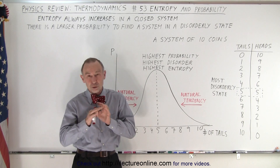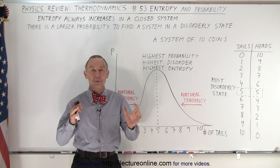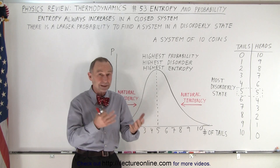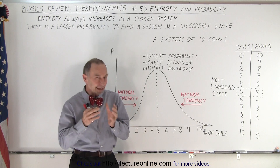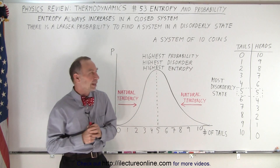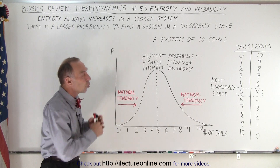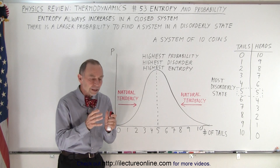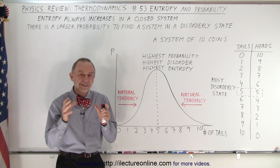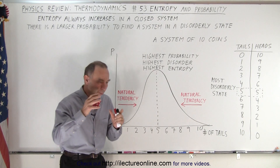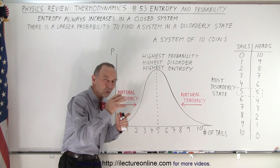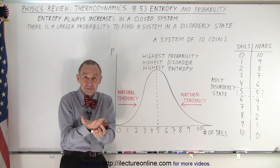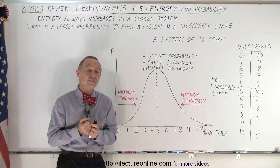Before we show you a numerical example, a more concrete example of how to calculate that, let's take a look at this. Let's say we have 10 coins, and we know that a system always tends to move towards a more disorderly state — but what does that mean for having 10 coins?